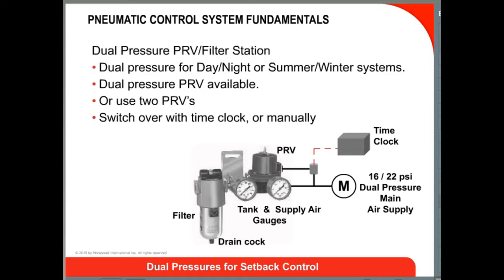There are also dual pressure PRVs available to accommodate dual pressure thermostats, such as the day-night and summer-winter line of thermostats. These have two set points, such as one for the day and one for the night. The changeover from a day to night set point is done by switching the main air pressure from a lower to a higher pressure, such as 13 to 18 psi or 16 to 22 psi. The air pressure switchover is usually determined by a time clock in a dual pressure PRV, or with two PRVs that switch between one or the other with an electronic air switch wired to a time clock.